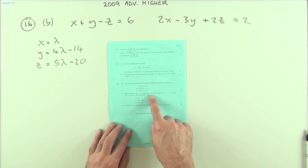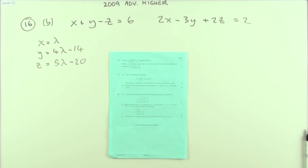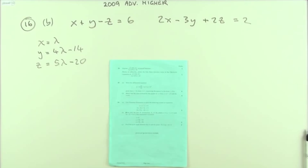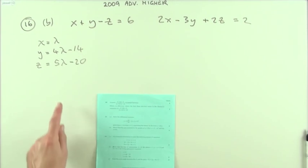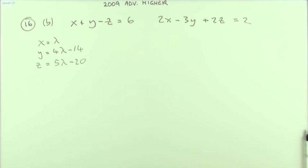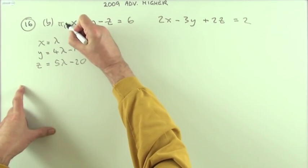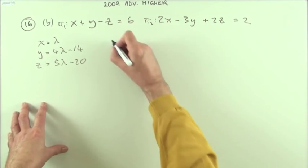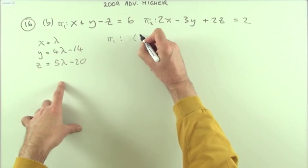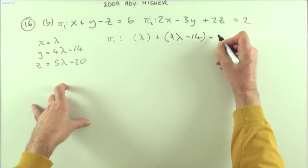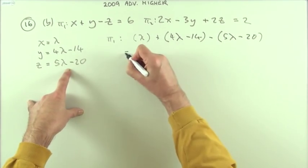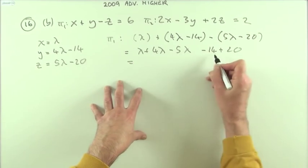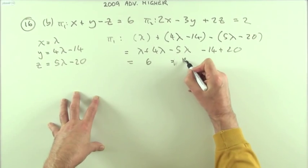Part b: show that the line of intersection of the two planes is given by the given parametric equations. Notice those two planes are just the first two equations from the Gaussian elimination. There are only two marks, and since it asks to 'show' the result, one approach is to prove the parametric equations satisfy both plane equations. Substituting into plane one: lambda plus four lambda minus 14 minus five lambda minus 20 — the lambda terms cancel to zero and the constants sum to six, which is correct.